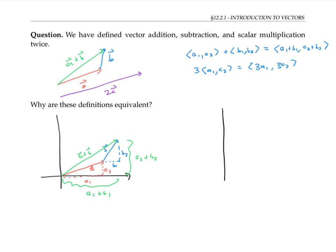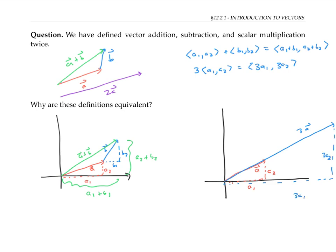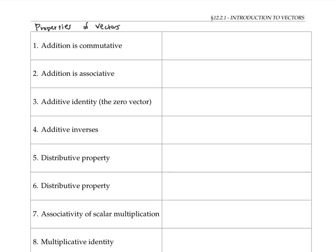We can also see that the two definitions of scalar multiplication work out the same. If we start with vector a and draw, for example, three times a, then whatever the components of a are — call them a₁ and a₂ — the components of 3a will be three times as big. So scalar multiplication works out the same whether we think about it in terms of drawing arrows or multiplying components.